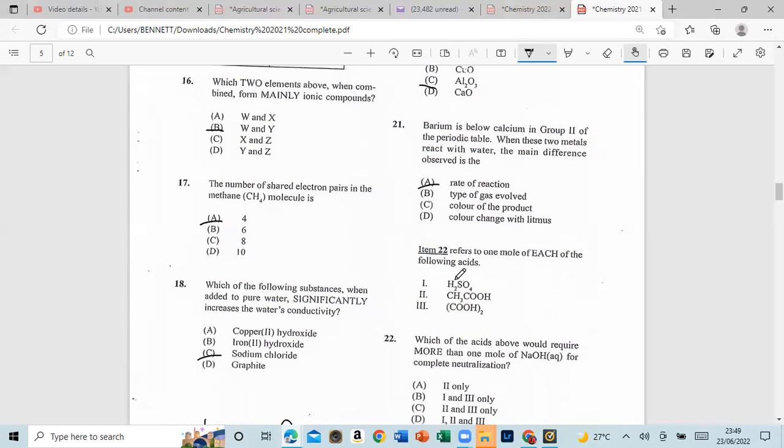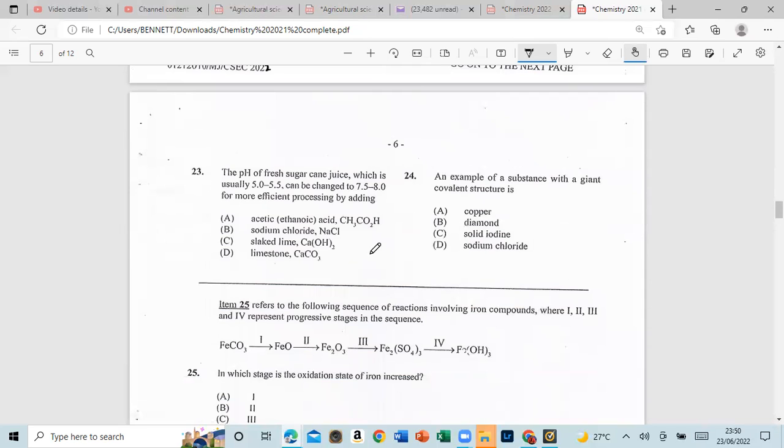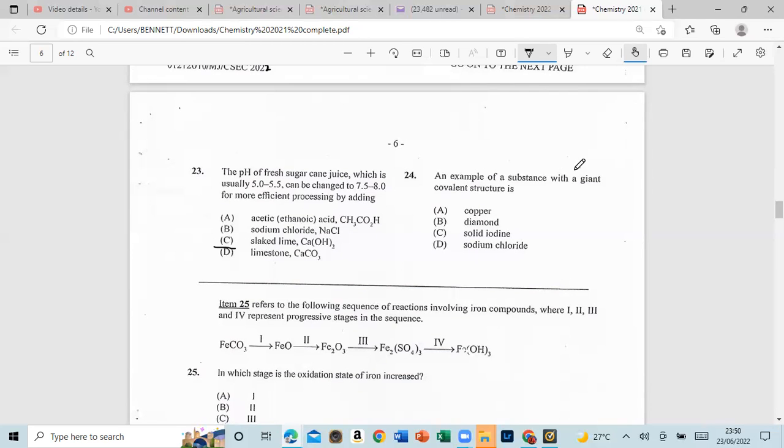Number 22, which of the following acids with 1 mole requires more than 1 mole of sodium hydroxide for complete neutralization? The acids are C3H2O2, C2H2O2, which of the following acids above will require more than 1 mole of sodium hydroxide for complete neutralization? And that is 1 and 3, the acids. Number 23, the pH of fresh sugar cane juice, usually 5 to 5.5, can be changed to 7.5 to 8.4 for efficient processing by adding, and that's C, slaked lime. Number 24, an example of a substance with a giant covalent structure is copper, diamond, solid iodine, or sodium chloride? And that is diamond.